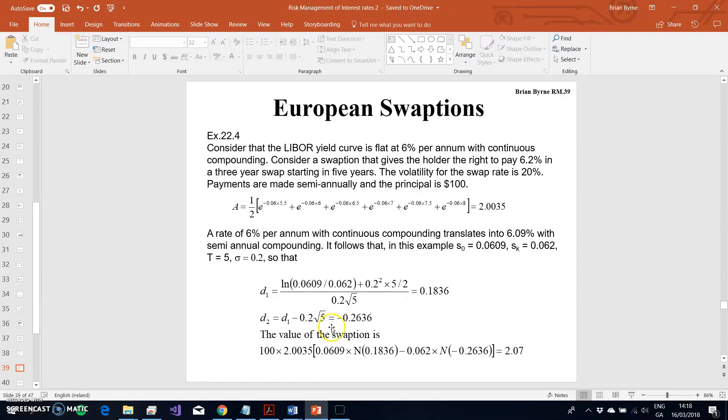We have d1 and d2, then we estimate the value of the swaption by taking 100, could be 100 million, multiplying by the annuity term—this is a present value type annuity term—and then the forward swap rate, and then we take the normal cumulative probability of d1 and normal cumulative probability of d2. Then we have the exercise, which is the fixed rate in the swap. We get 2.07 as our estimate.